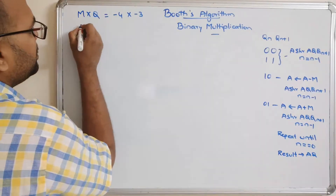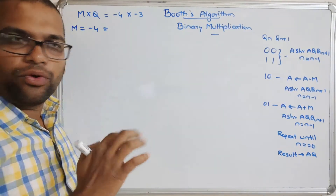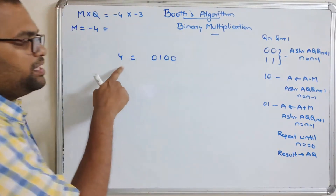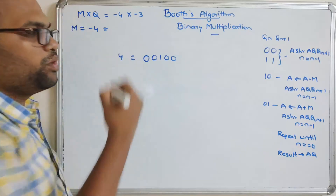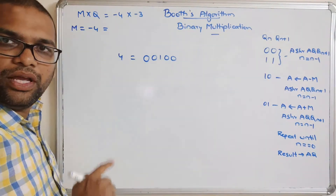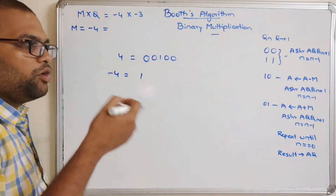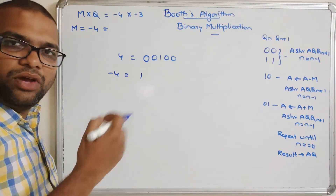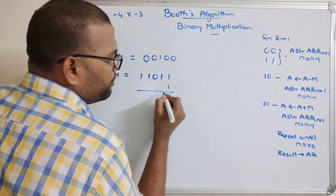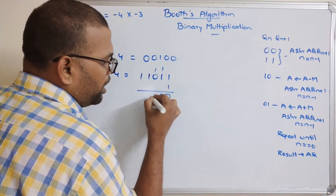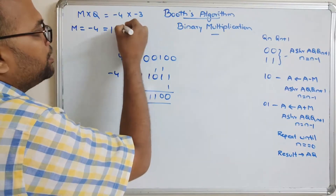M equals minus four. Minus four means the two's complement of four. The four-bit representation of positive four is 0100, but since this is a signed number, the first bit represents the sign, so we add an extra bit: 00100. For minus four, we take the two's complement: one's complement of 00100 is 11011, then add one, giving 11100. So the binary representation of minus four is 11100.